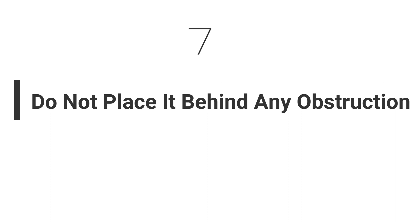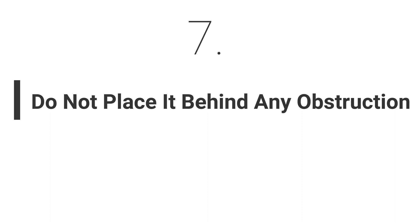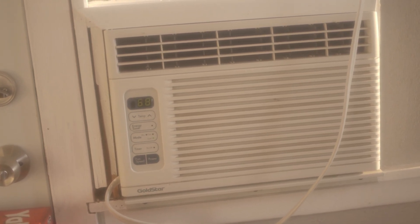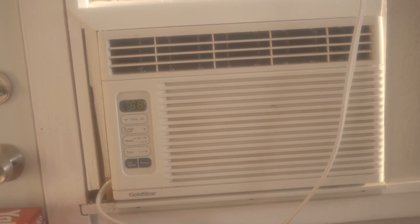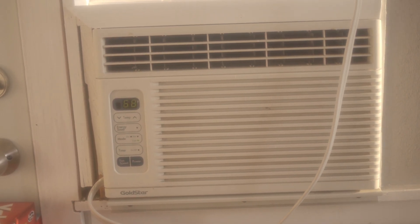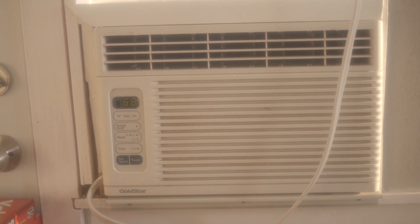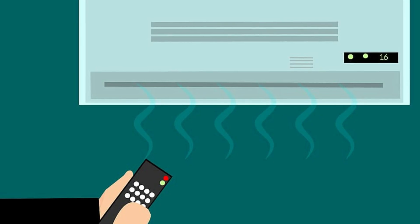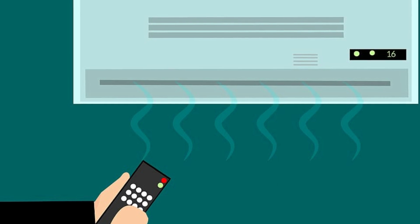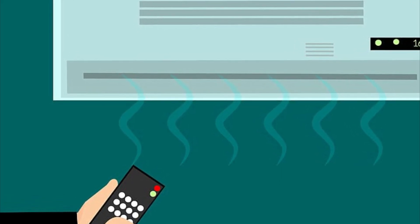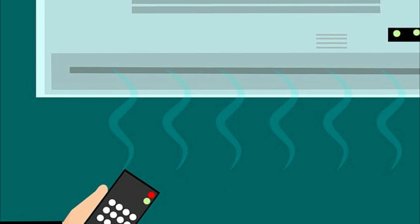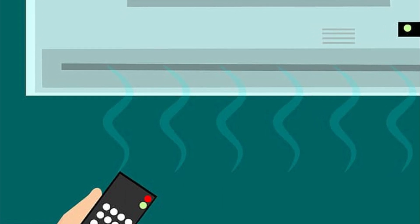Tip number seven: do not place it behind any furniture or wall that may obstruct the airflow. You should not place your indoor unit behind any object like furniture which may block the flow. Due to this, air will not be evenly circulated in the entire room and you will have to keep the AC on for a longer time, which will boost your electricity bills.